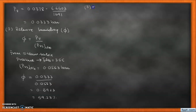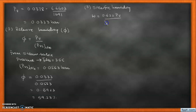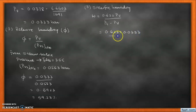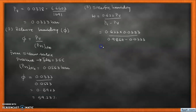Third is specific humidity. Specific humidity W = 0.622 × PV / (PT − PV). Substituting values: W = 0.622 × 0.0333 / (0.9864 − 0.0333), giving us 0.0215 kg per kg of dry air.